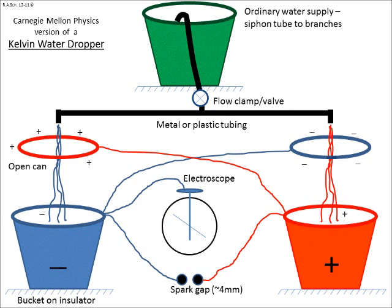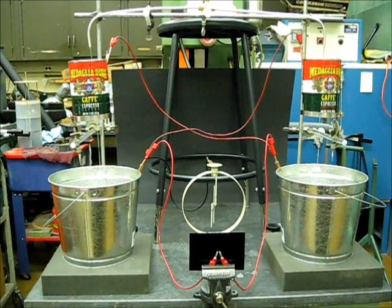There is an accumulation of charge on the two buckets that grows without bound until the electric field in the spark gap is large enough to cause a discharge, a spark. Before the discharge occurs, the electroscope charges up and deflects. With that preliminary explanation, let's watch the device in action some more.